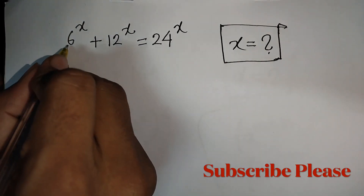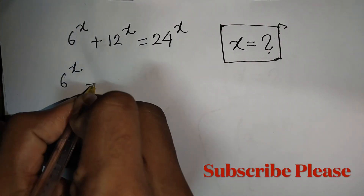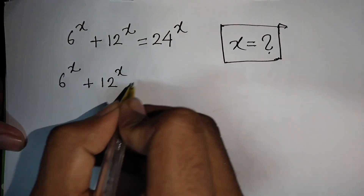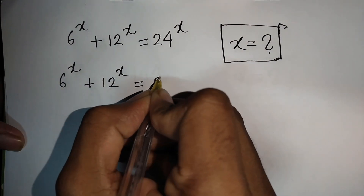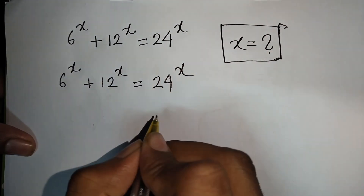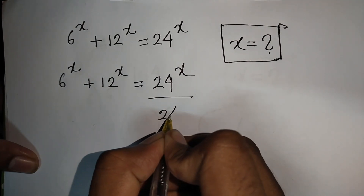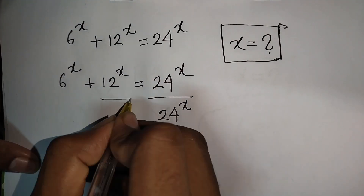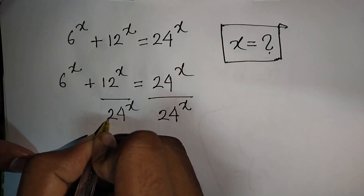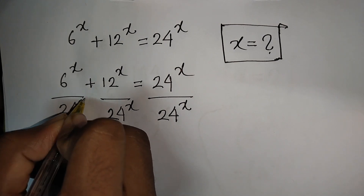Find the value of x, where 6 to the power x plus 12 to the power x is equal to 24 to the power x. Now we divide both sides by 24 to the power x.